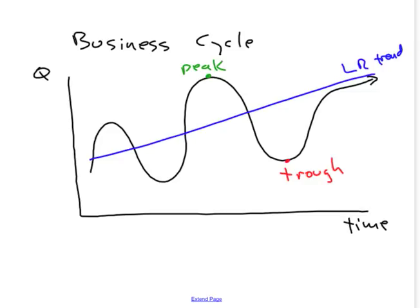The top of the business cycle is called a peak, where the economy is running quite hot. Q is growing fast, labor markets and other factor markets are tight, so you have inflation but you have low unemployment.